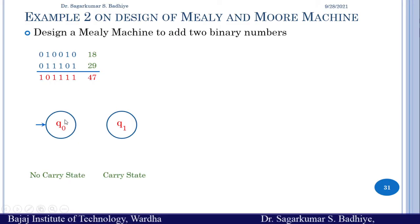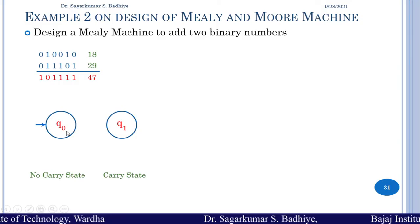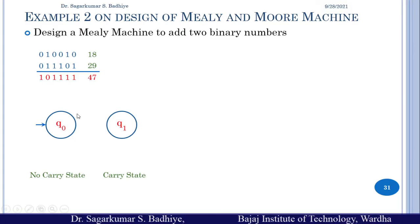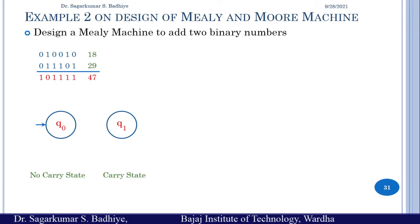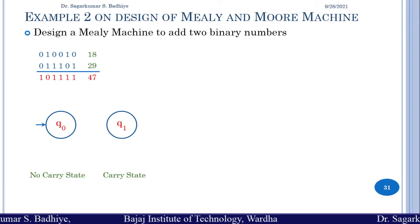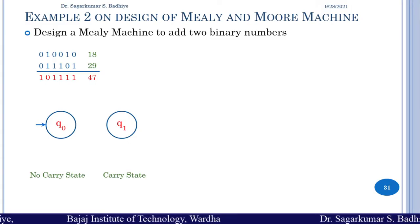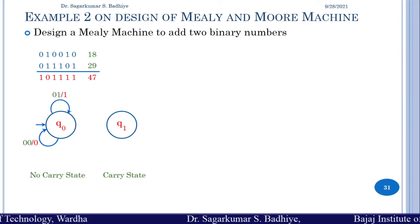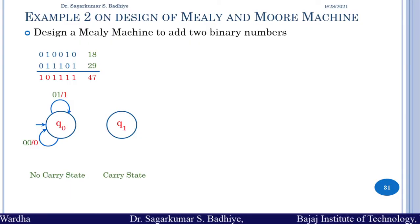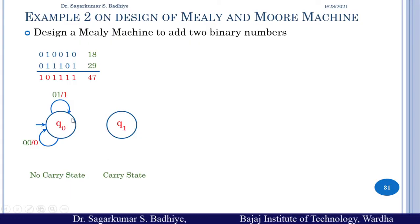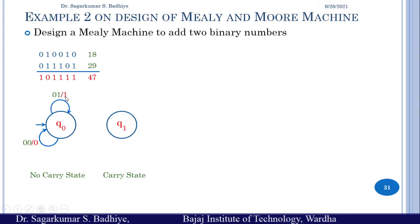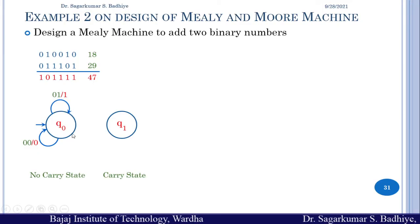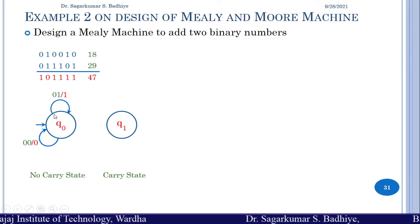In state q0, if the input is 00, there is no carry, so 0 plus 0 gives output 0 with no carry generated — we stay in q0 and produce output 0. If the input in q0 is 01, there is no carry, so 0 plus 1 produces output 1 with no carry — we stay in q0. Similarly, if the input is 10, we produce output 1 and remain in q0.